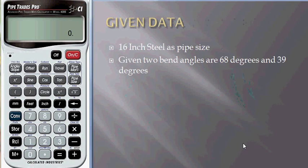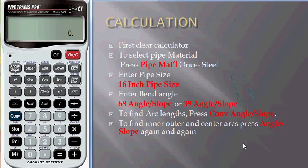Let's see the given data. 16 inch steel as pipe size, and bend angles are 68 degrees and 39 degrees. Now, let's use the calculator to find the solution for this problem.